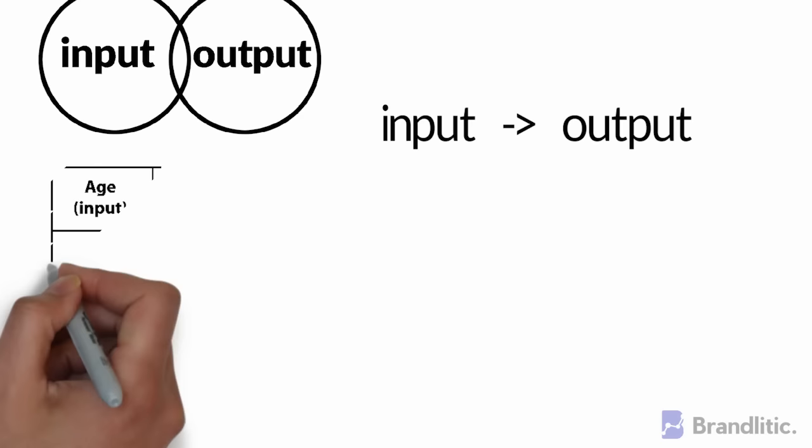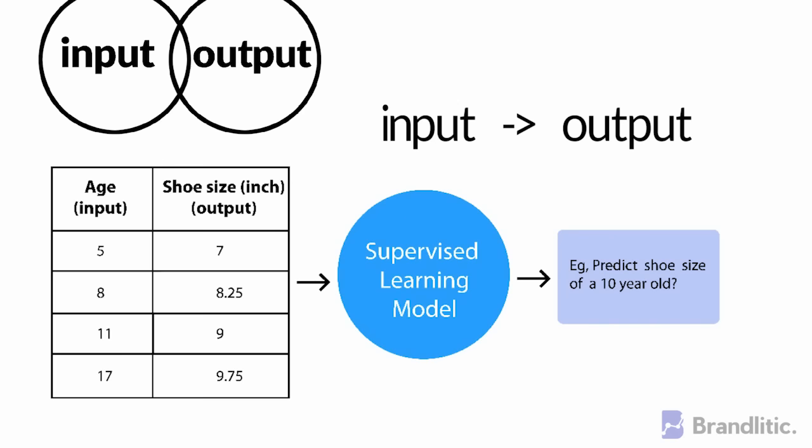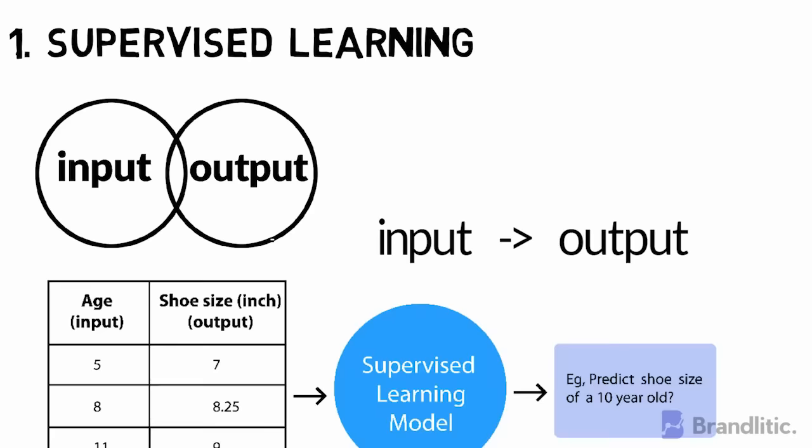For example, if we have a dataset of two variables, one being age which is the input and the other being shoe size as output, we could implement a supervised learning model to predict the shoe size of a person based on their age.